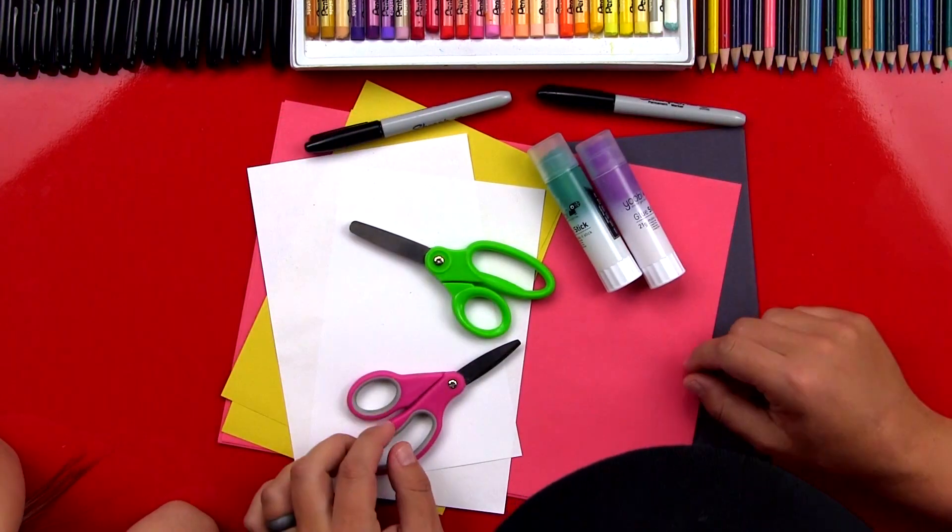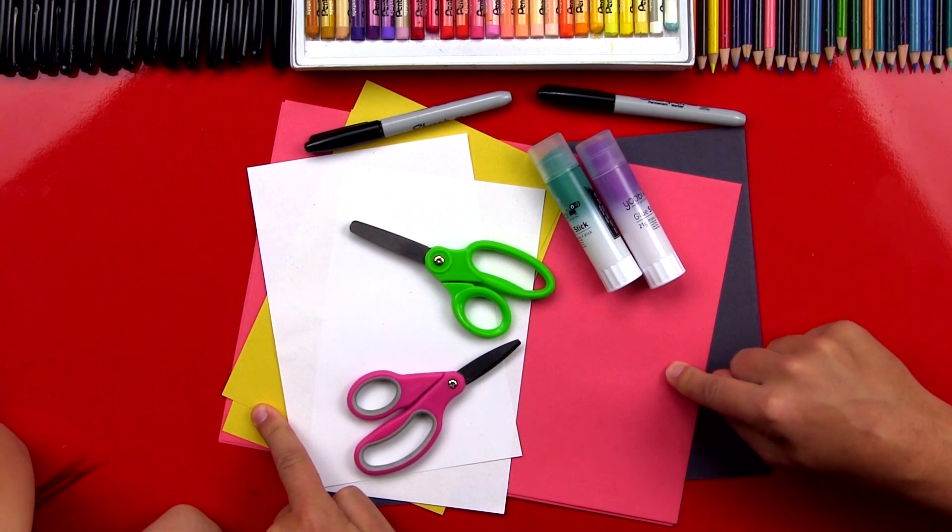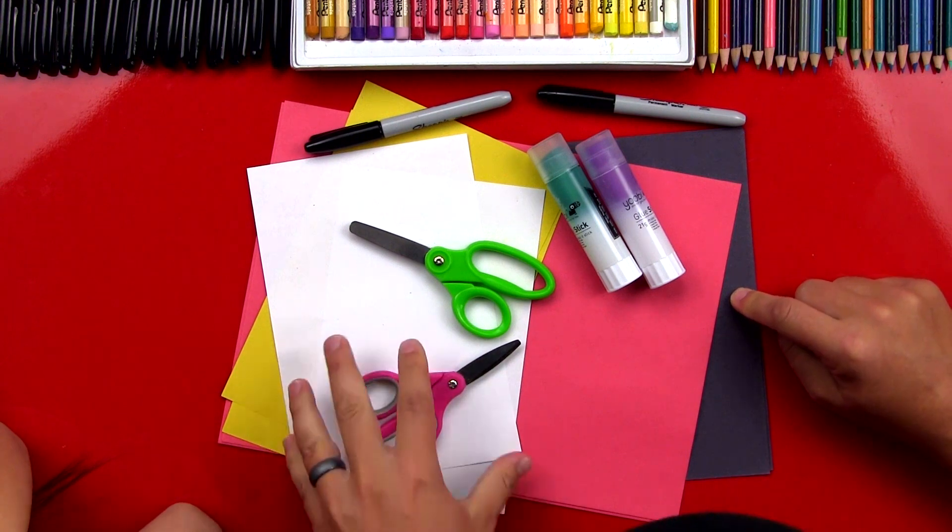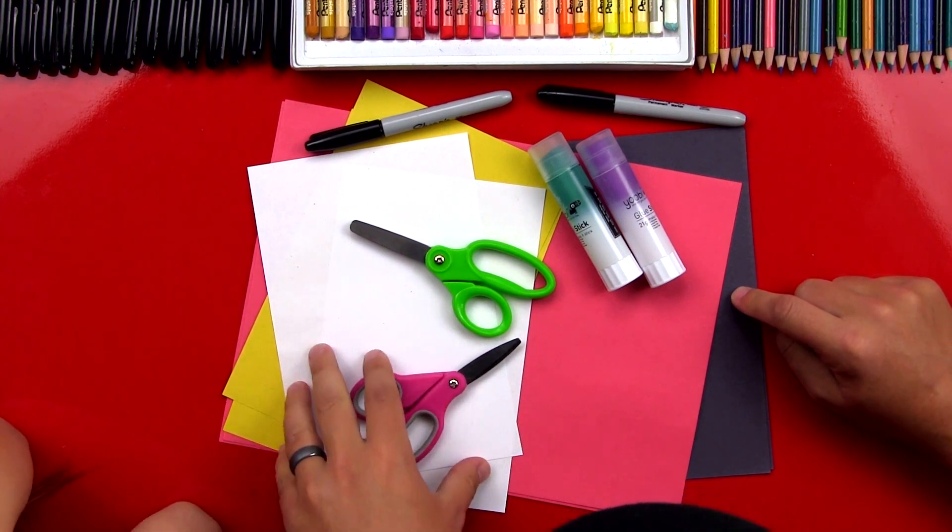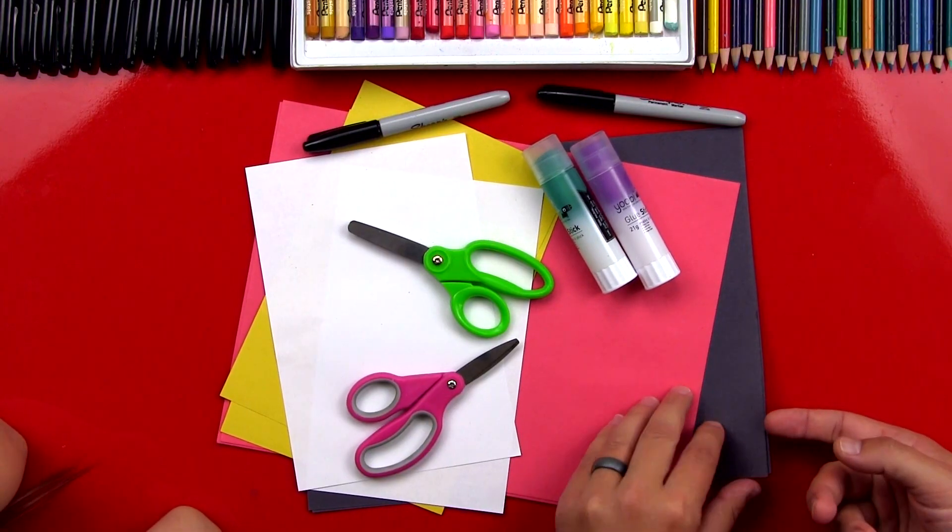And we got some markers. Crayons and paper. And we have paper. We have white paper, yellow, red, black. We need half sheets of the yellow and the white, and we have full sheets, two full sheets of red and two full sheets of black.